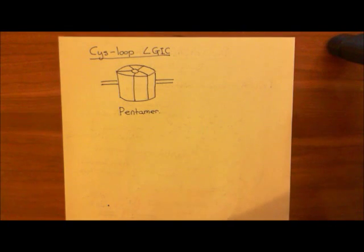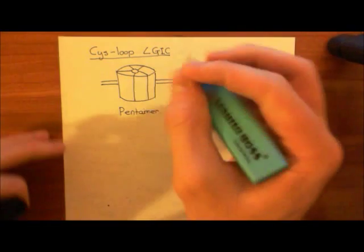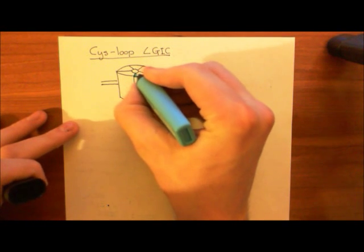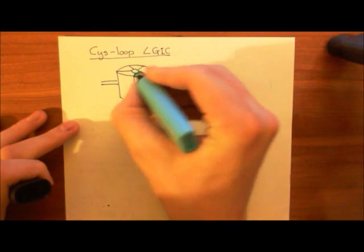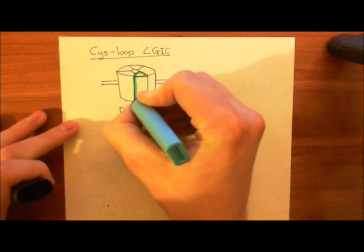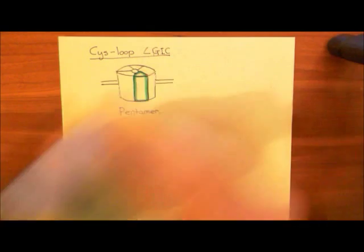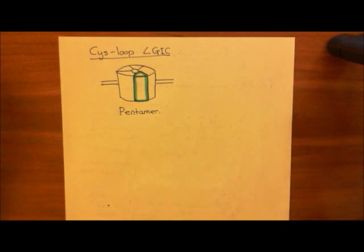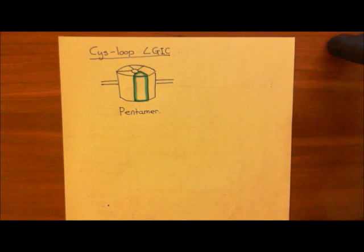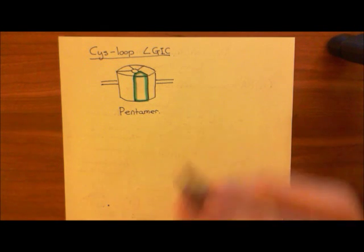Let's now pull out one of these subunits and have a look at the structure of this protein that makes up a fifth of the GABA-A receptor. I should emphasize that there is not just one GABA-A receptor — there are many GABA-A receptors, and we'll talk about the different types.